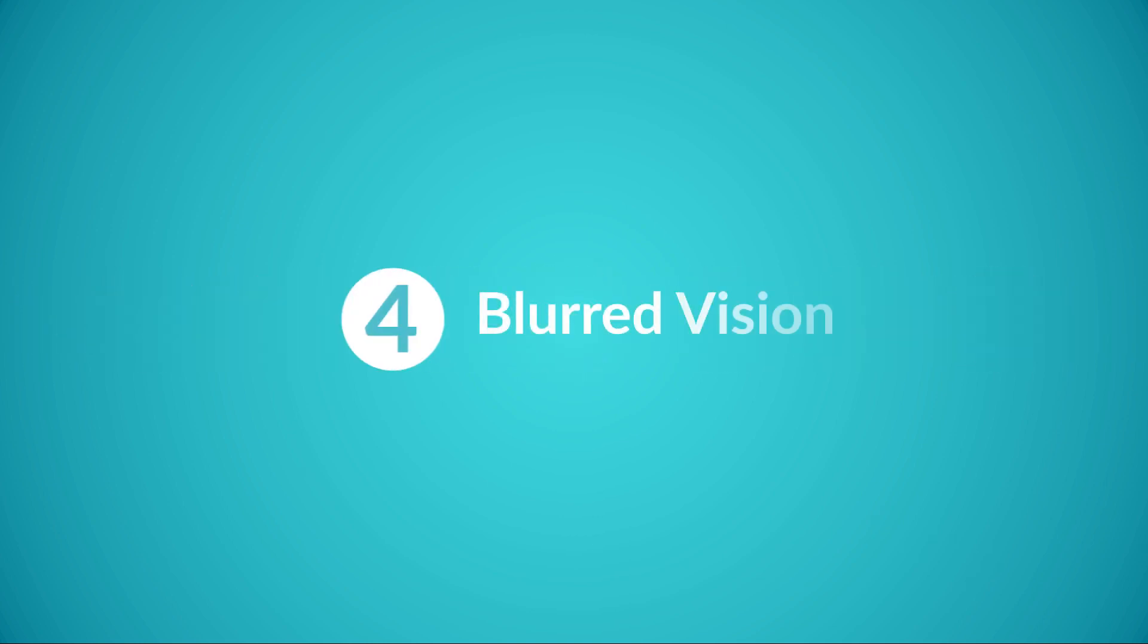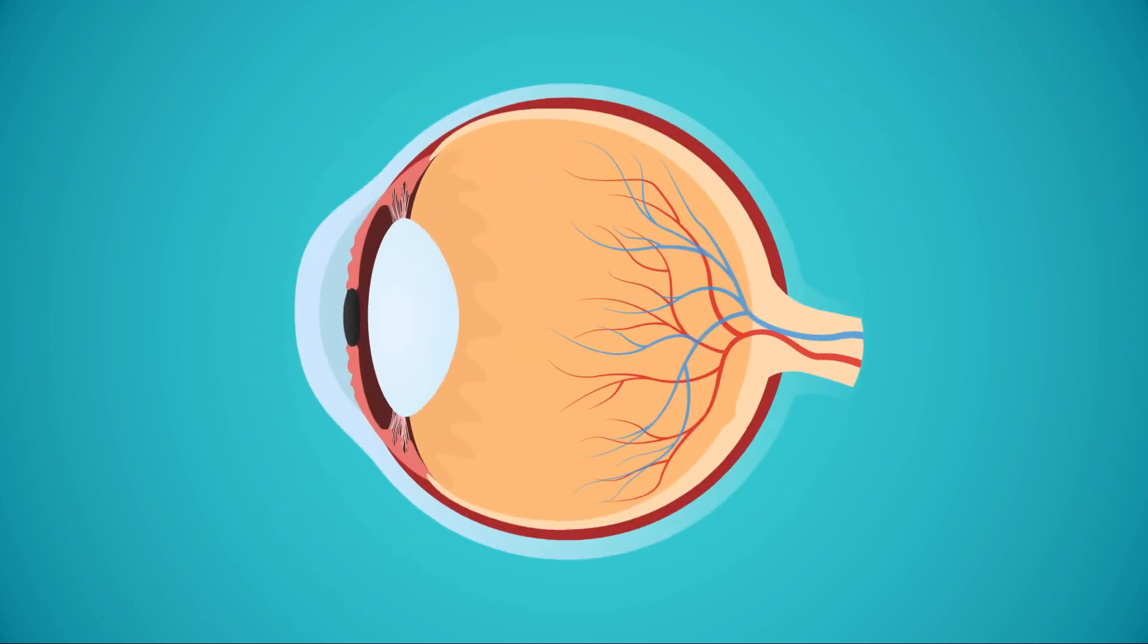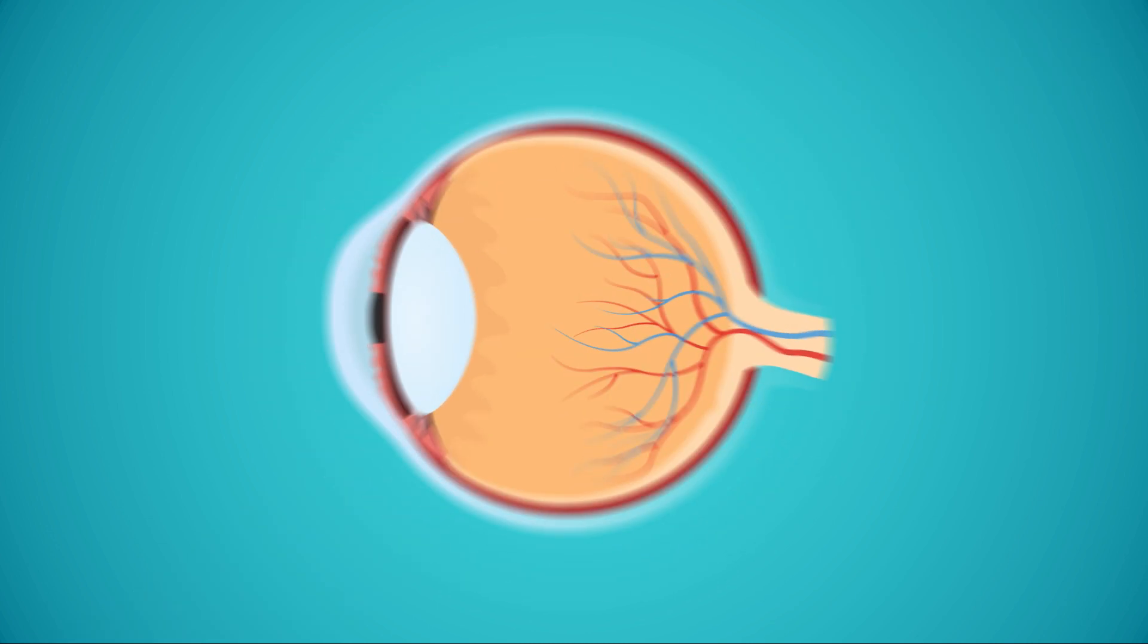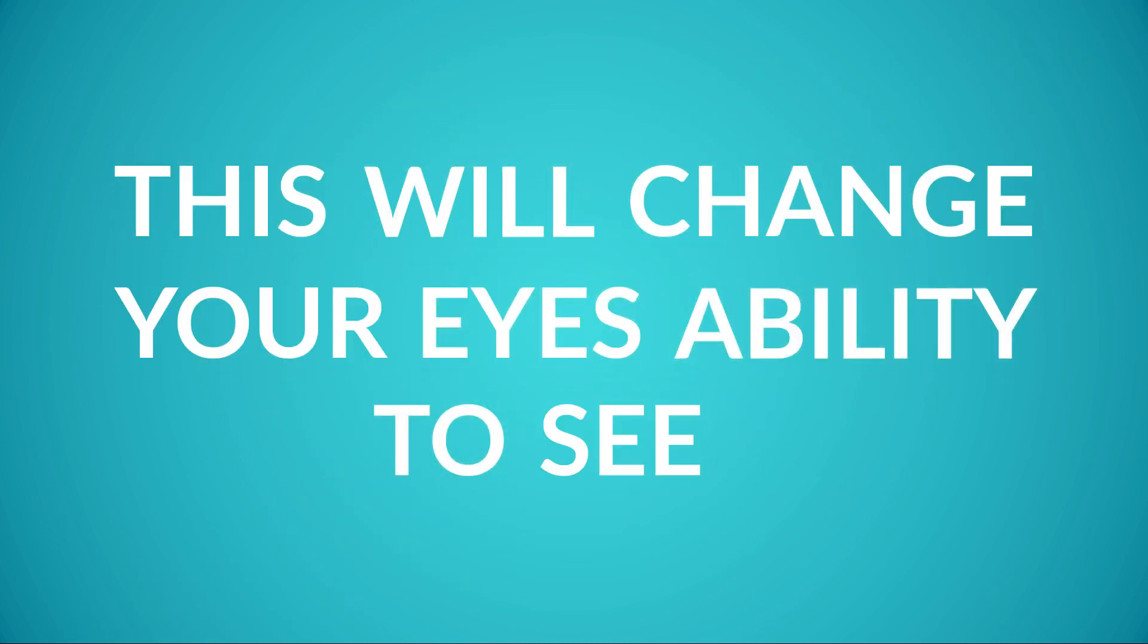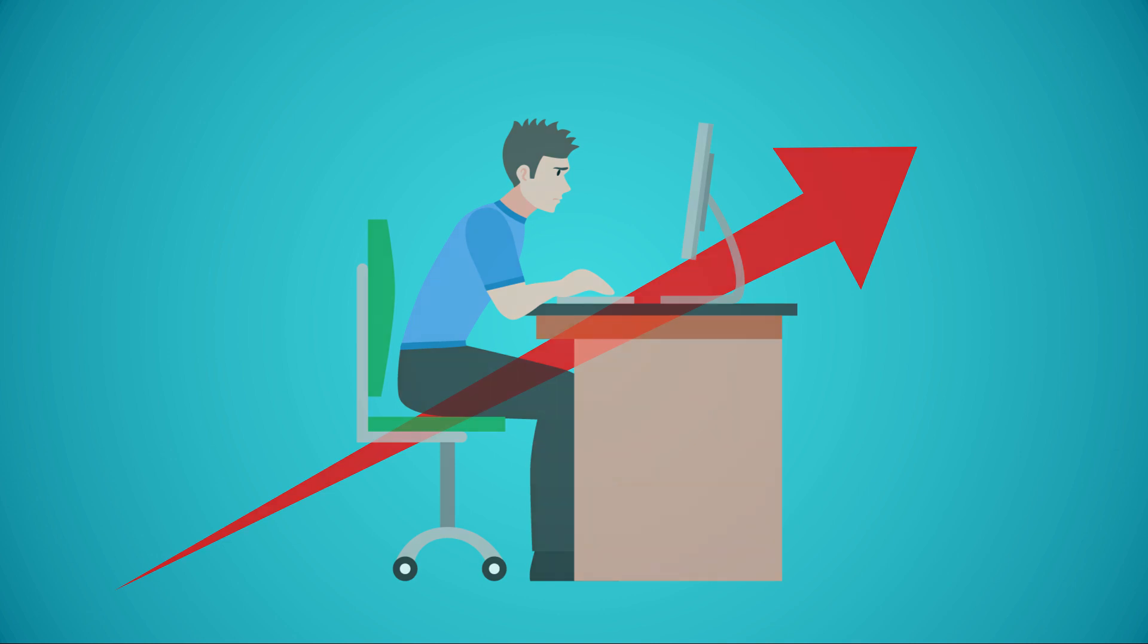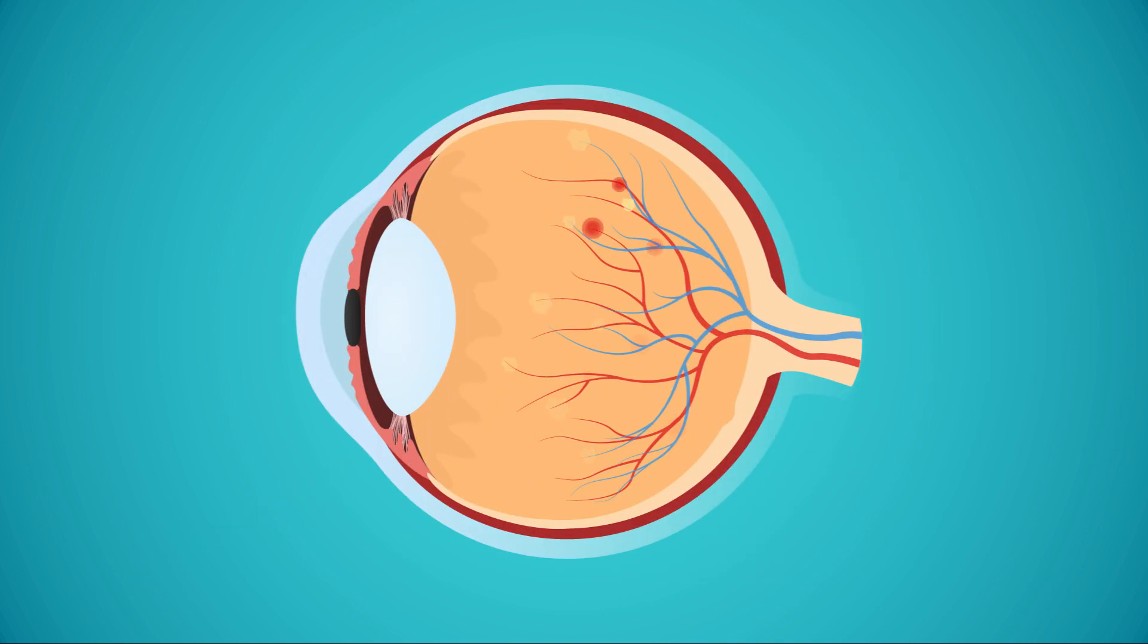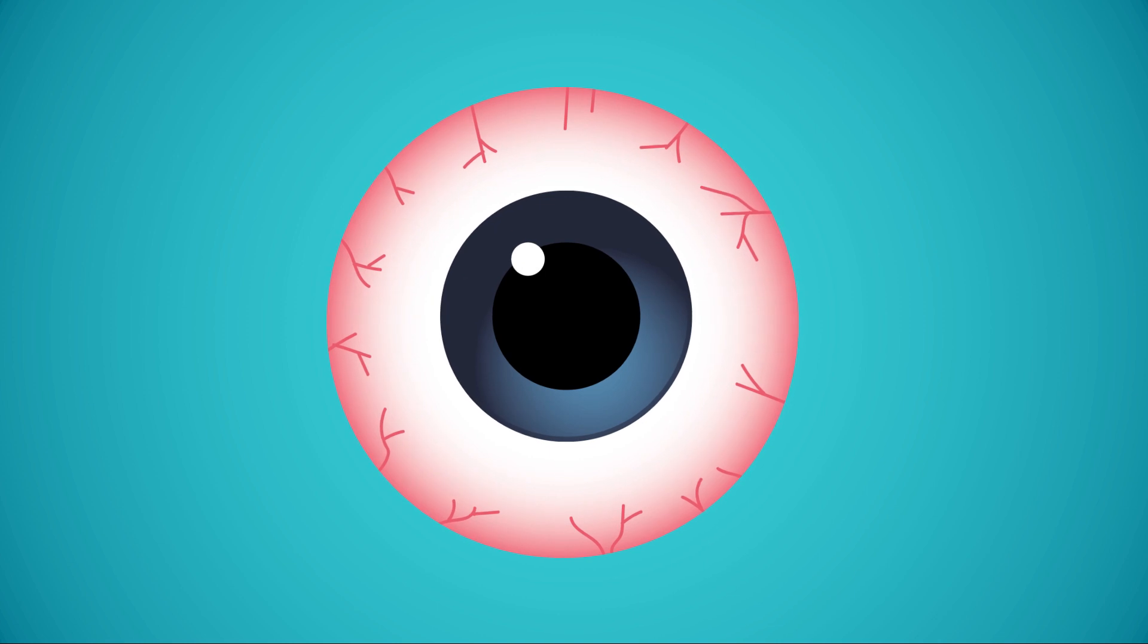4. Blurred Vision. When your blood sugar levels are high, this will cause the lens of the eyes to swell. This will change your eye's ability to see. This can be a temporary problem, which may develop rapidly when your sugar levels are high. However, in the long term, you could develop a diabetes complication known as retinopathy. This happens as a result of high blood sugar levels damaging the retinal blood vessels in the eye.